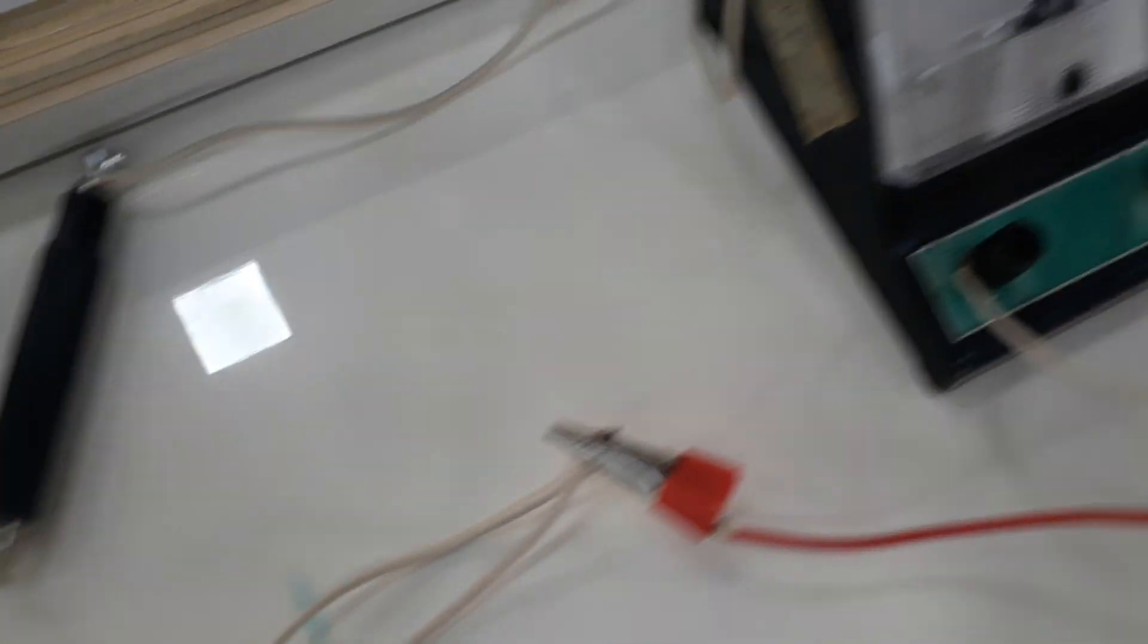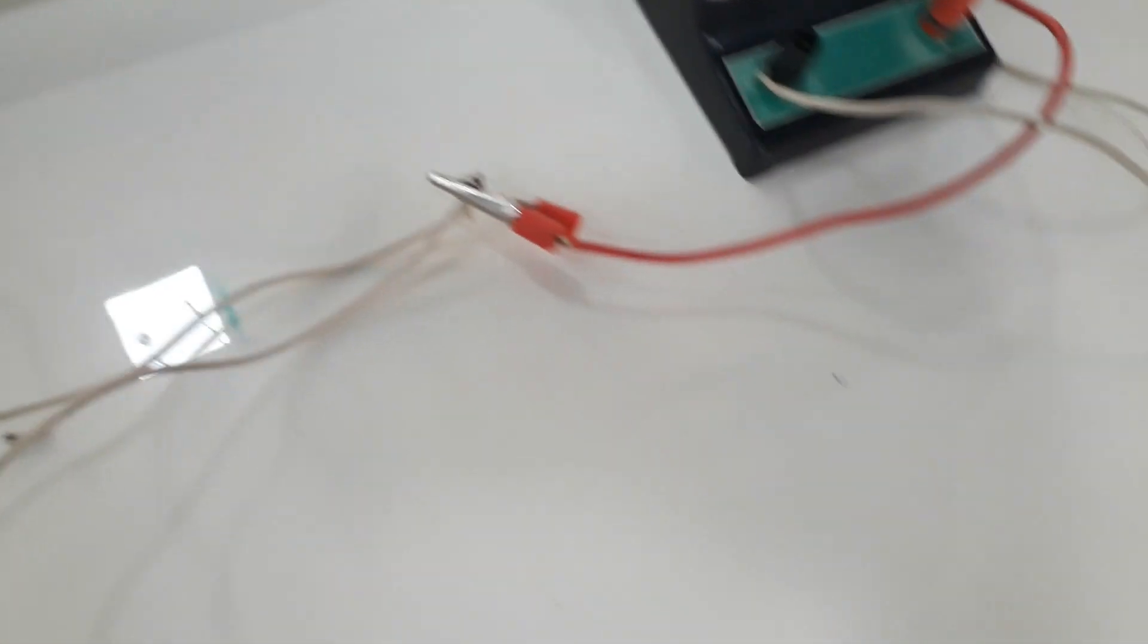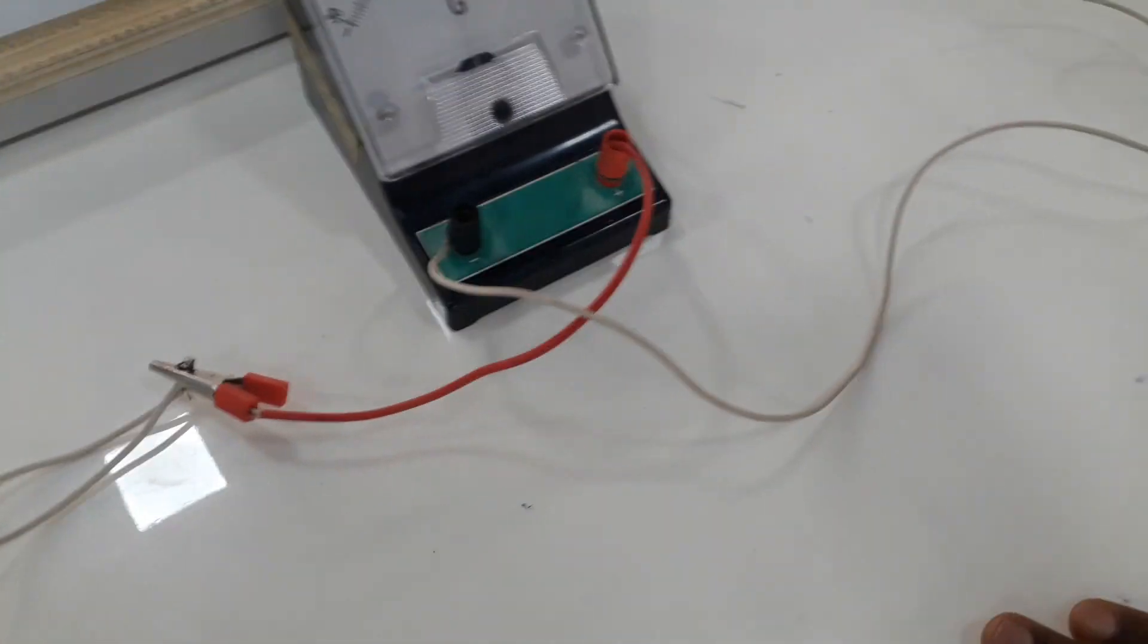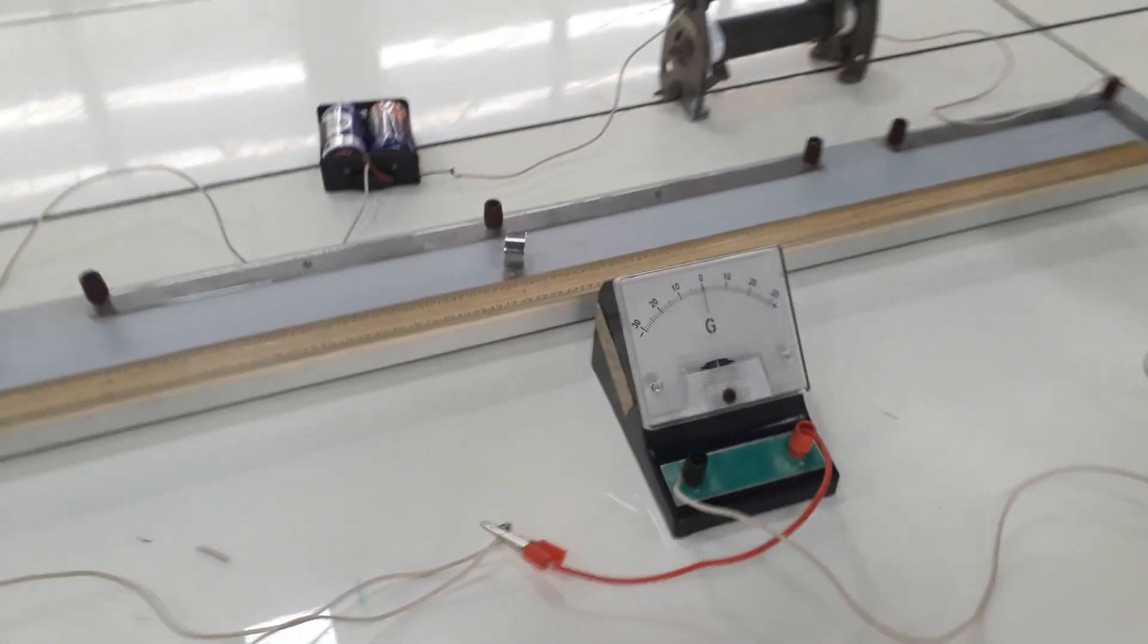And from K2 is connected to my galvanometer. And from my galvanometer, I have it connected to my Joki, which I will use to determine the direction of flow of current.